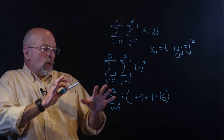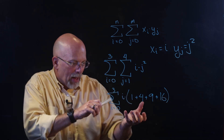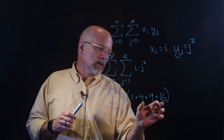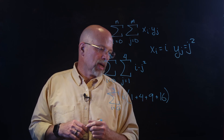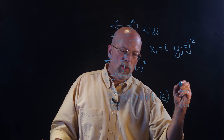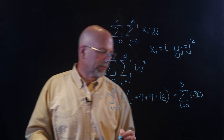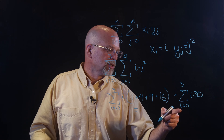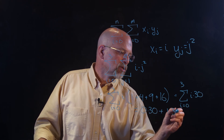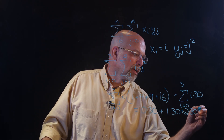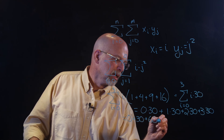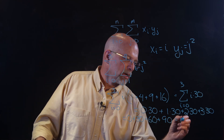Now we add this up: one plus four plus nine plus 16 — four plus 16 is 20, one plus nine is 10, so that's 30. So this is actually equal to the summation from i equals zero up to three of i times 30, which equals: when i equals zero, that's zero times 30; plus one times 30; plus two times 30; plus three times 30. That gives us zero plus 30 plus 60 plus 90, which equals 180.